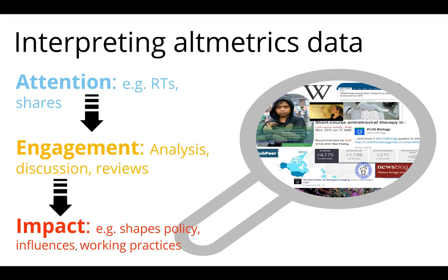Interpreting the altmetric data is about things like retweets and shares — the attention it gets — but also the engagement, the discussion, the reviews, and then the impact: what is shaping policy, what is being influenced. So if a piece of research you wrote in 2010 suddenly appears in a policy document in 2016, has that helped shape that policy? In the past you would not have probably known it had been used — it would have been pulled out in a literature search and featured in the policy document without you knowing unless you were specifically searching in those areas.